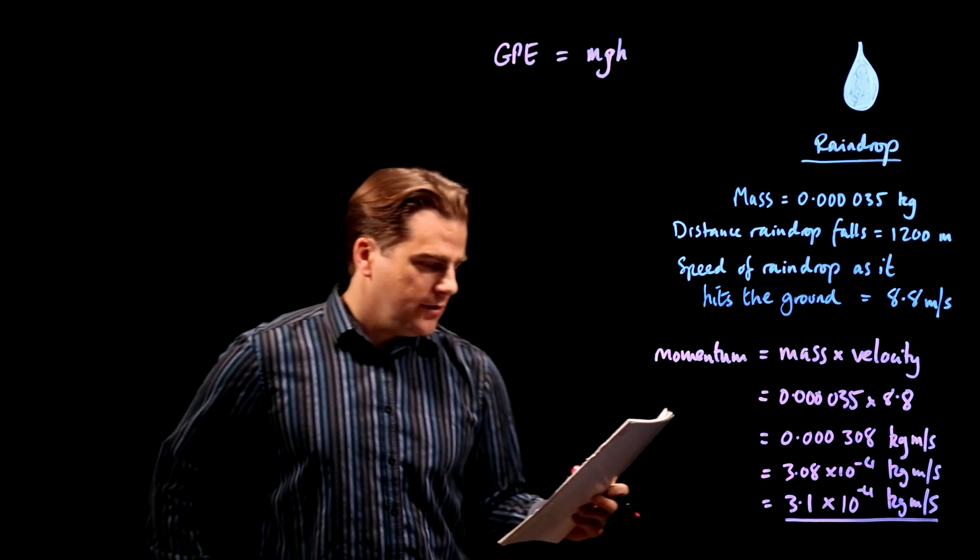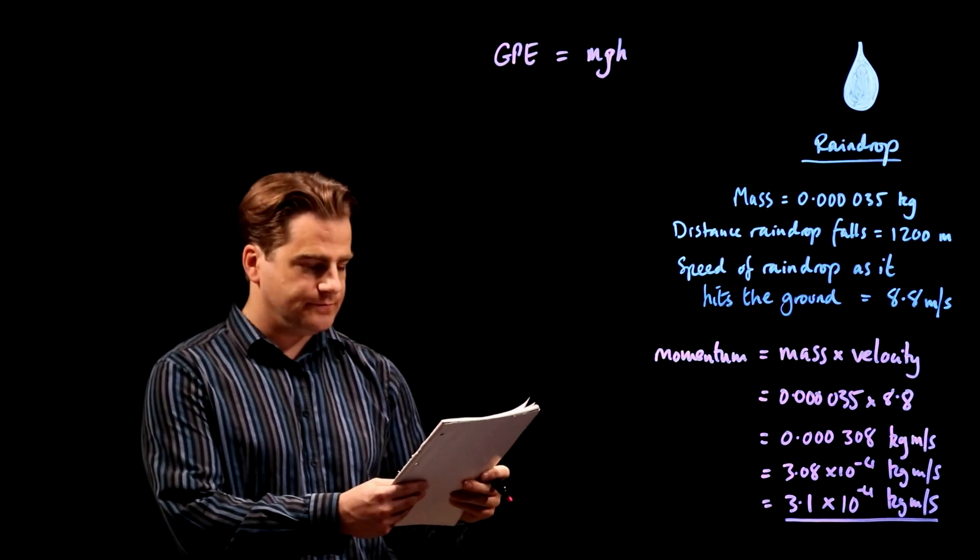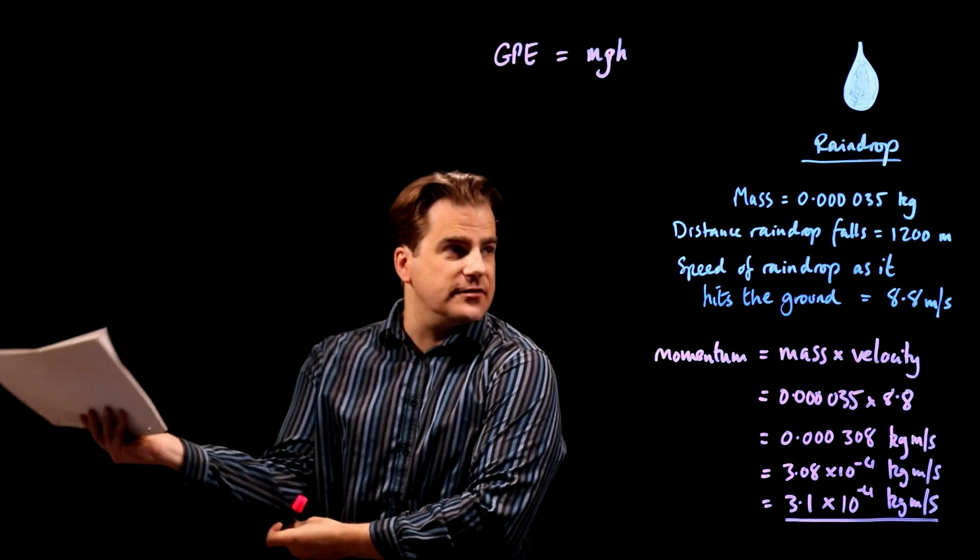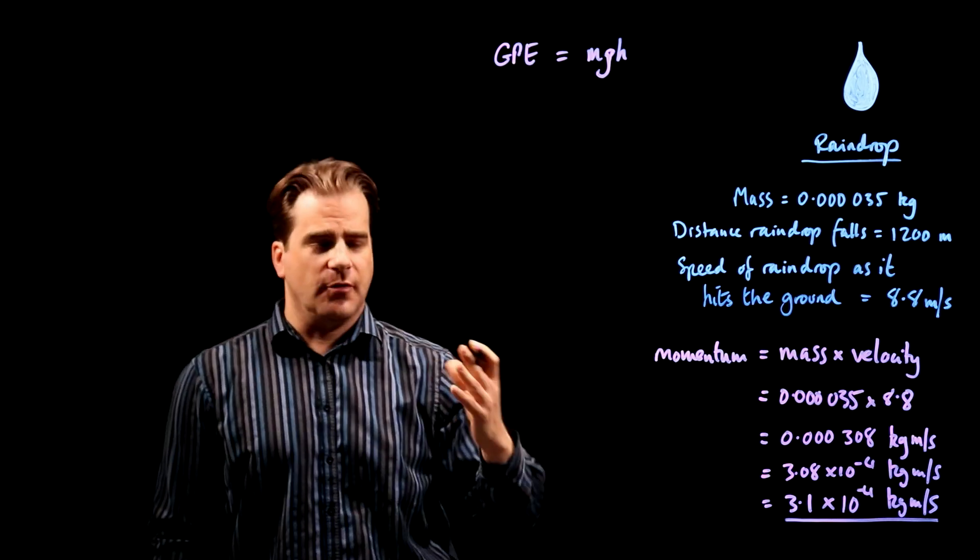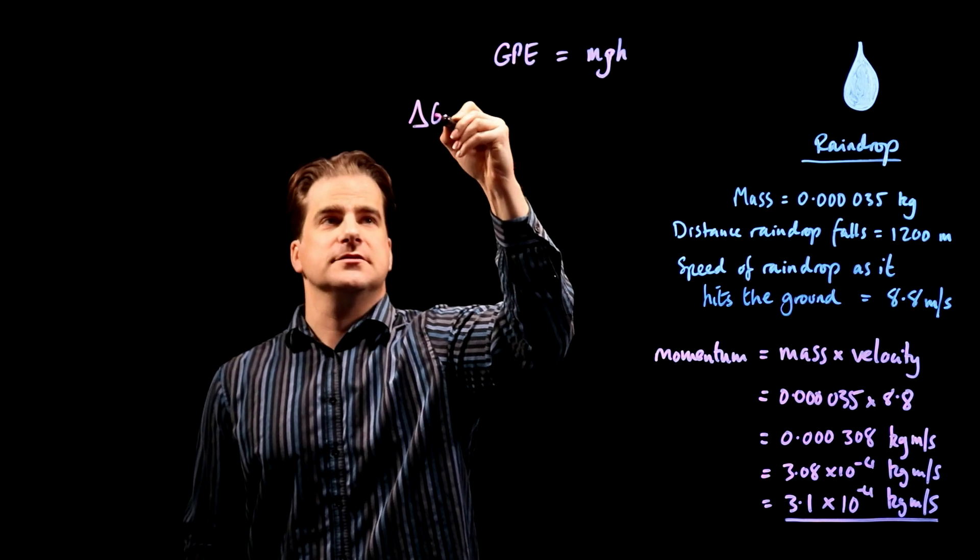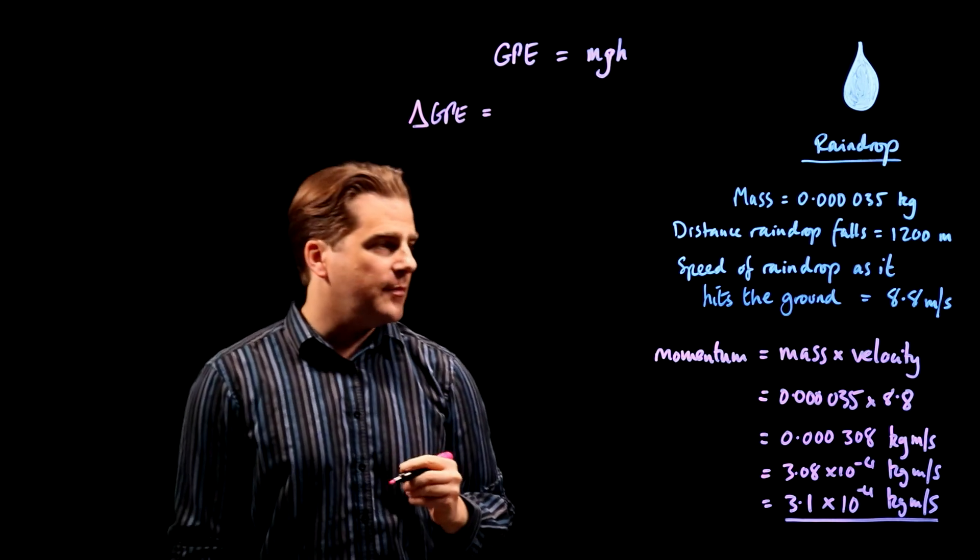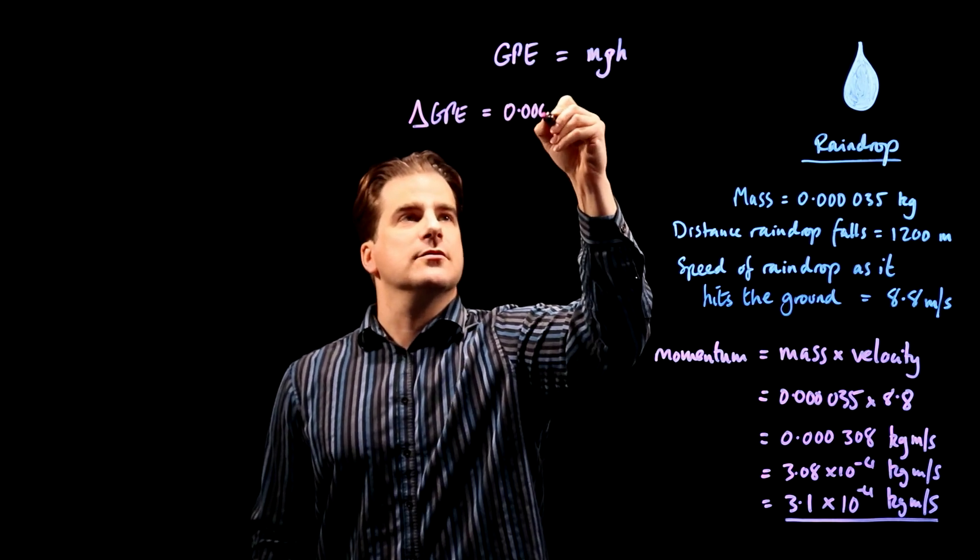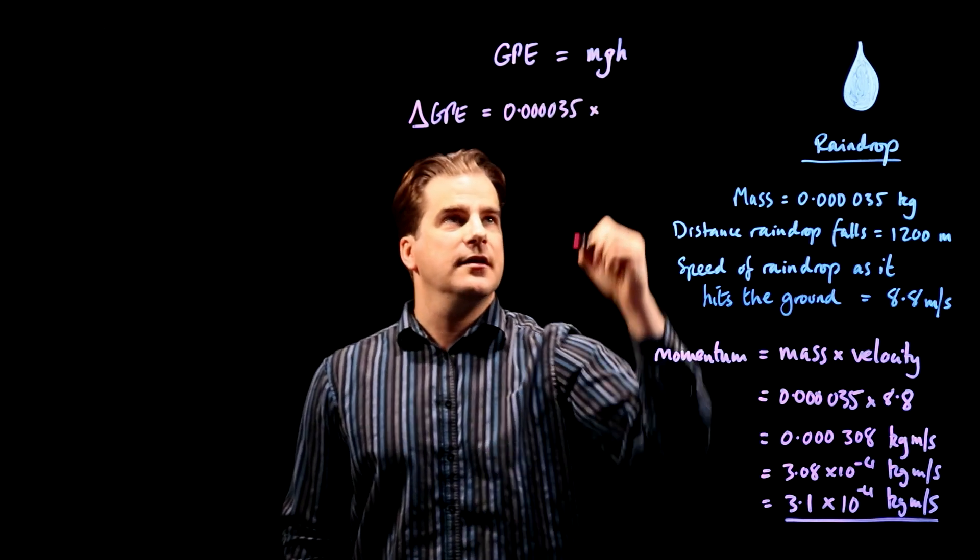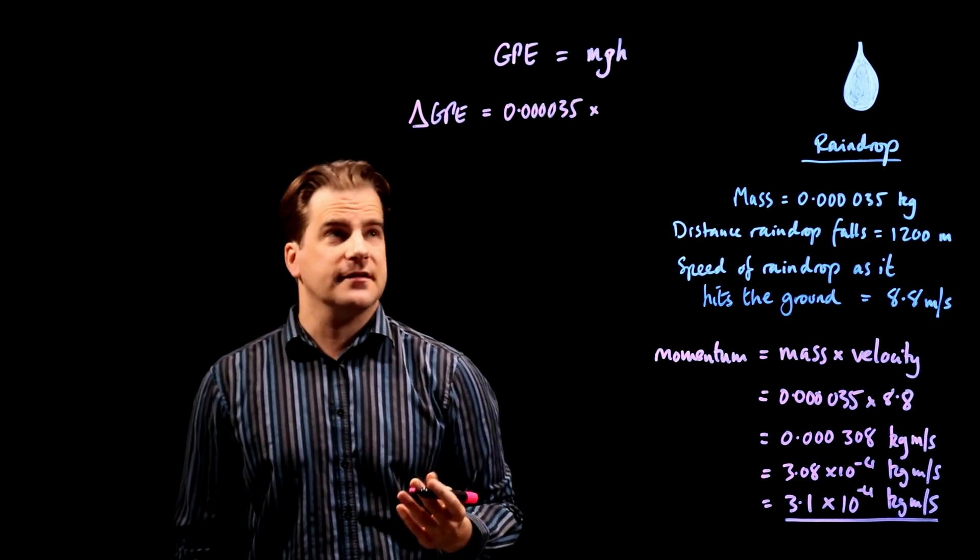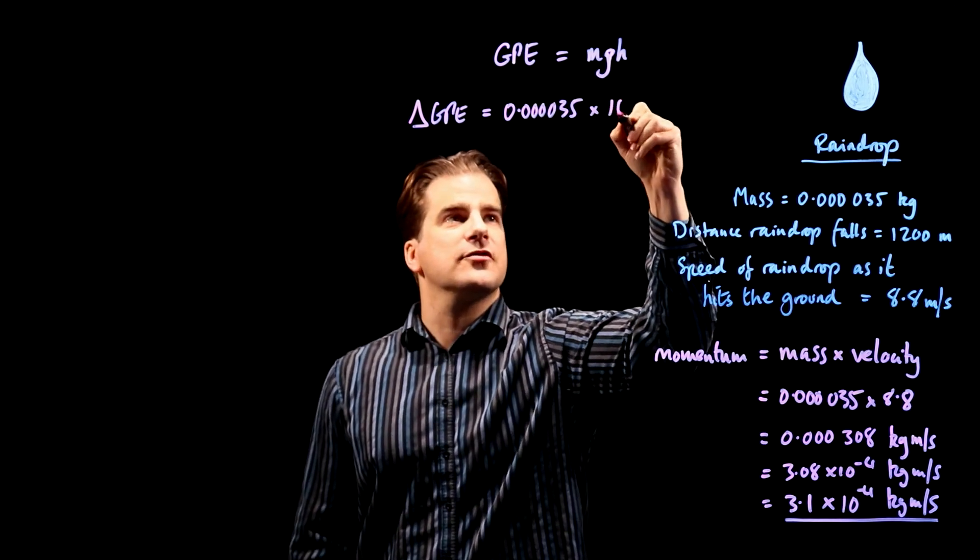Calculate the change in GPE when the raindrop falls 1,200 meters. Okay, right. Well, same thing again, just got to stick this into the equation. So, change in GPE, if you want to be a bit smart, you can say delta GPE, delta meaning change, okay, triangle, is mass 0.00035, it's got to be in kilograms times g. Now, at the beginning of your exam question sheet, it says take g to be 10.